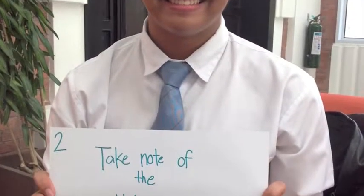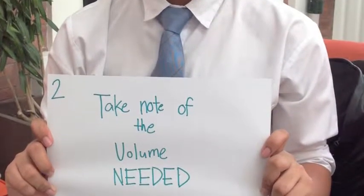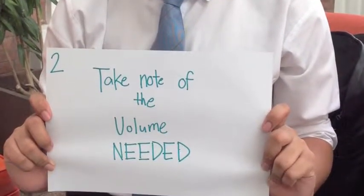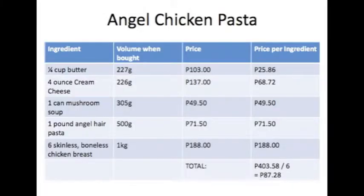For the next step, you should take note of the volume needed — meaning the volume that is asked for in the recipe. Note: if you want to be organized, you can use a table, like this.